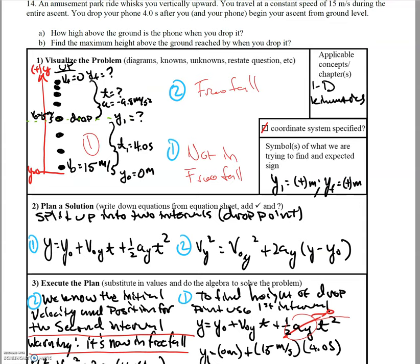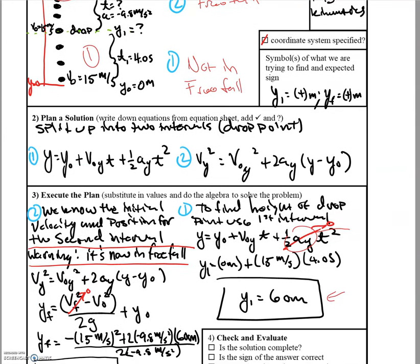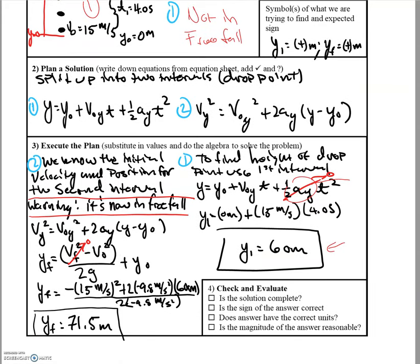To find the maximum height, the key is that maximum height is code for the point where the y-velocity equals zero — it's the turnaround point. You know the initial velocity (15 m/s upward) and the initial height (60 m). Since the phone is in freefall, you know the acceleration, so you can solve for the final height. Doing that, you find the maximum height from the ground is 71.5 meters.